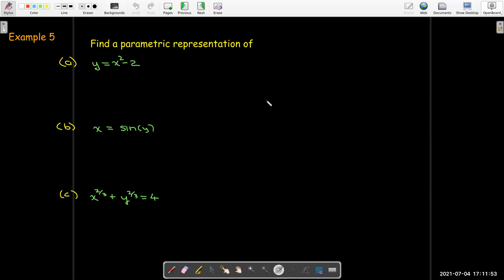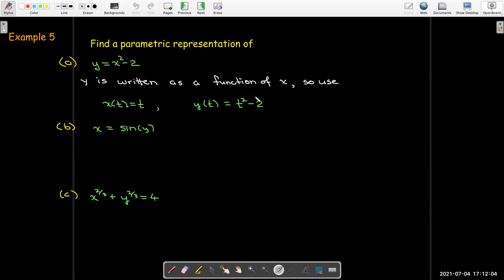So let's work out an example in each case. In the first one, I have y as a function of x, y equals x squared minus 2. So I'm going to use x equals t. And then I put t in the place of x in that equation to get y equals t squared minus 2.